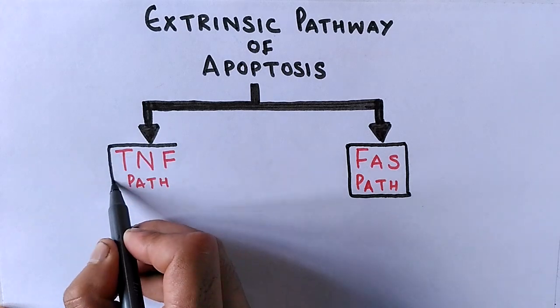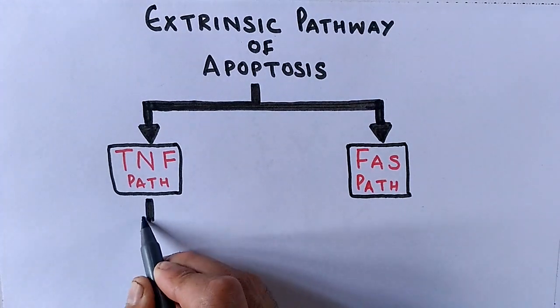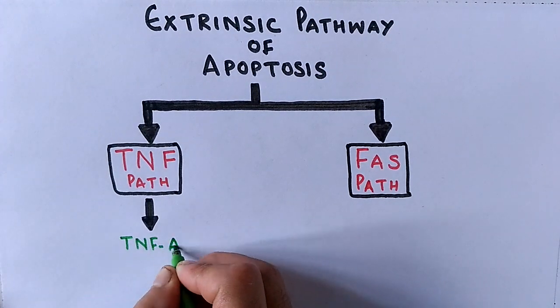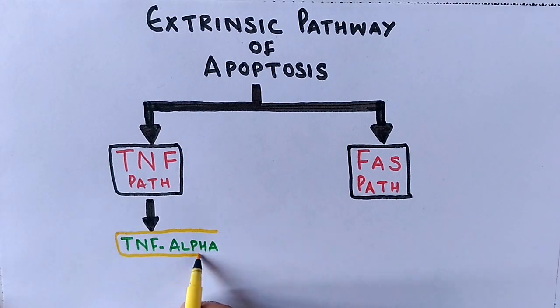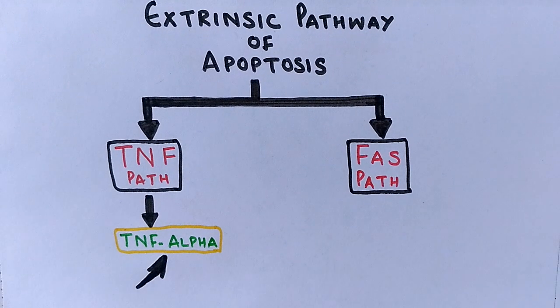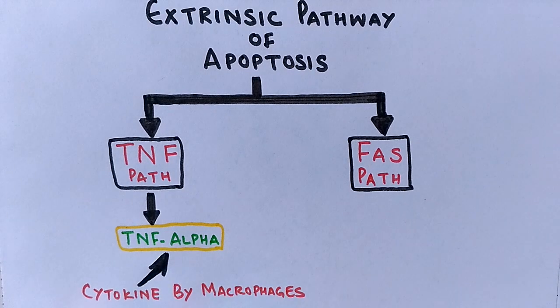In the TNF path, the extracellular apoptotic signaling molecule is TNF alpha, which is a cell signaling protein cytokine produced by activated macrophages, natural killer cells, and CD4 positive cells.